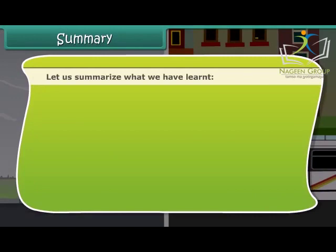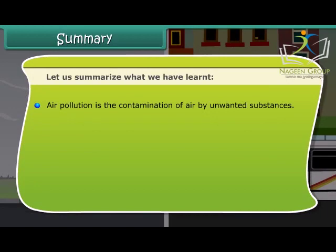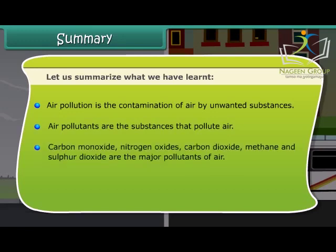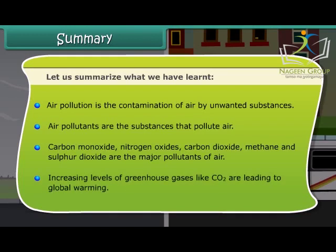Let us summarize what we have learned. Air pollution is the contamination of air by unwanted substances. Air pollutants are the substances that pollute air. Carbon monoxide, nitrogen oxides, carbon dioxide, methane, and sulfur dioxide are the major pollutants of air. Increasing levels of greenhouse gases like CO2 are leading to global warming.